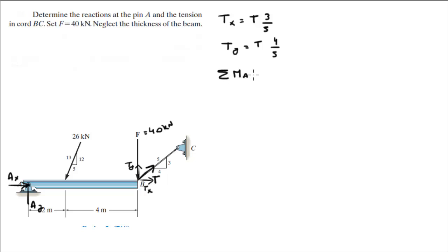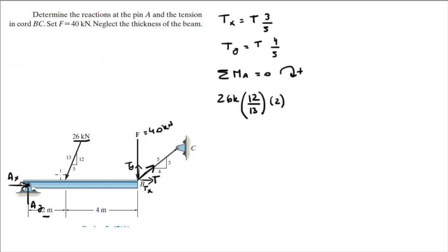Now, sum of the moments at A is equal to 0, assuming clockwise is positive. The 26 kN force is creating a moment: its Y component is 26 kN times 12/13, and its X component goes straight towards A, creating absolutely no moment. So only the Y component, 26k times 12/13, times the distance of 2 meters, is positive (clockwise).